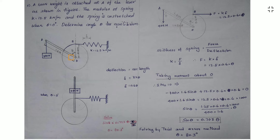When θ equals 0, the lever is in its initial position and the spring is unstretched — it is in its original length. When the load is applied, it acts downwards. The lever rotates and the load moves down, stopping at an equilibrium point. Our question is to find the angle θ at which the system is in equilibrium.